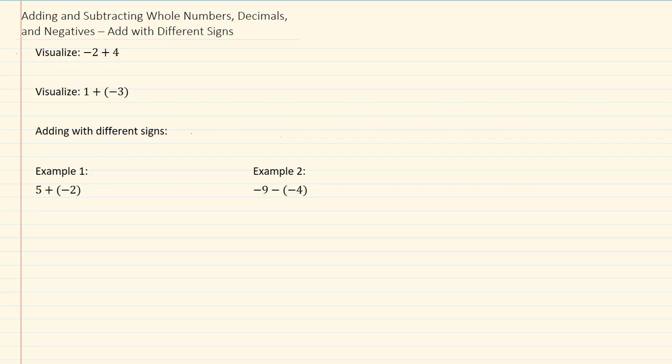Let's visualize negative two plus four. This would be the same as saying that I have two negatives and I have four positives. Now, we know that if we have one minus one, we get zero. So if we combine a negative and a positive there, it would be the same as saying I have zero.